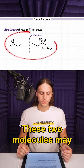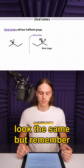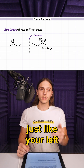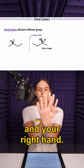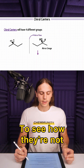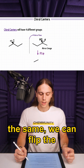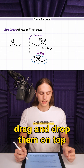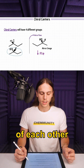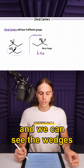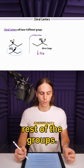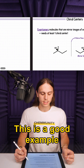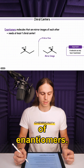These two molecules may look the same, but remember, they are non-superimposable, just like your left and your right hand. To see how they're not the same, we can flip the molecule over, drag and drop them on top of each other, and we can see the wedges and dashes don't align like the rest of the groups. This is a good example of enantiomers.